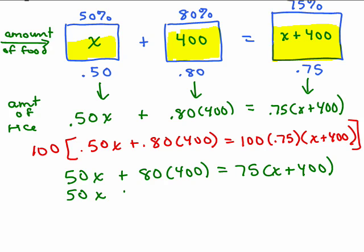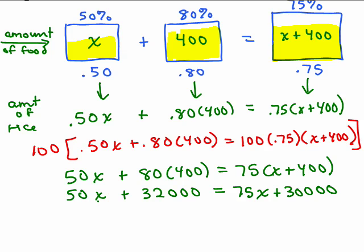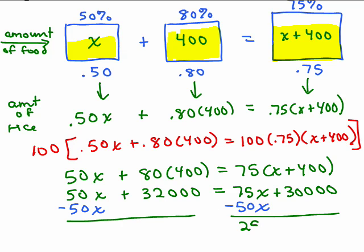This gives me 50X plus 80 times 400. Well, that's 8 times 4, which is 32, and then the 3 zeros — so 32,000. Then we distribute the 75: 75 times X is 75X, and 75 times 400 — well, 75 times 2 is 150, times 2 again is 300, with the extra 2 zeros — so 30,000. So I've got each side simplified, and now we can put the variables on either side. I'm going to subtract 50X from both sides so that the X term will be positive, giving me the X terms on the right side.